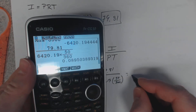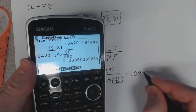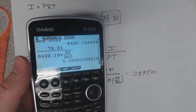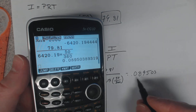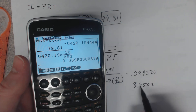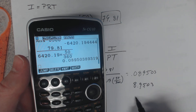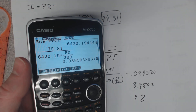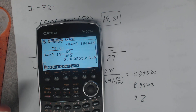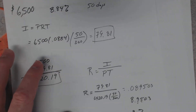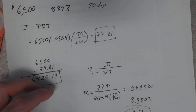The effective interest rate works out to 0.08950, or about 8.95%. Rounded to the nearest tenth of a percent, that is 9%. So the stated rate was 8.84%, but because you didn't get to use the full $6,500 for the whole time, the effective interest rate is actually 9%. That is your effective interest rate in this scenario.